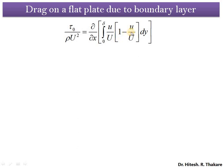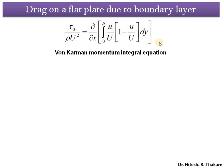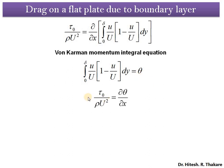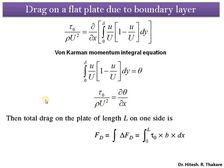The final outcome of the derivation is: tau_0 / (rho × U²) = d/dx [ integral from 0 to delta of (u/U)(1 - u/U) dy ]. This equation is known as the Von Kármán momentum integral equation, attributed to the scientist Von Kármán — who was a student of Ludwig Prandtl — and was derived in 1921. The integral quantity inside the brackets is nothing but the momentum thickness theta, so the equation can also be written as tau_0 / (rho × U²) = d(theta)/dx.